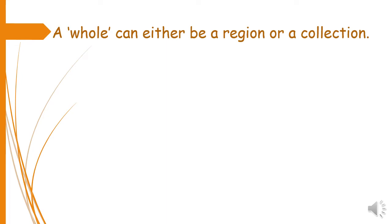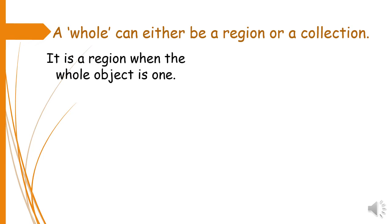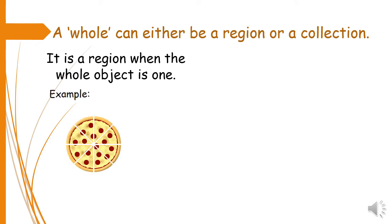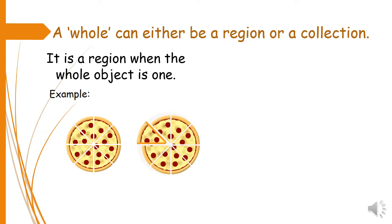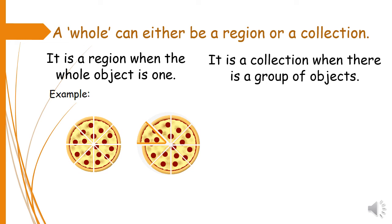A fraction is a part of a whole. A whole can either be a region or a collection. It is a region when the whole object is one — if we have one object and take a part of it, we can write the fraction for that whole. It is a collection when there is a group of objects — for example, if we have three bottles and two are shaded, meaning two are used, we can also write a fraction for that collection.